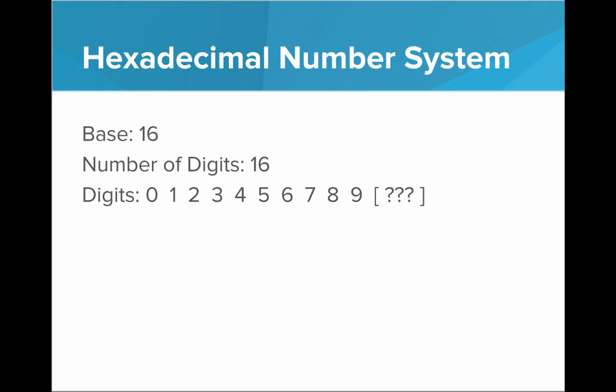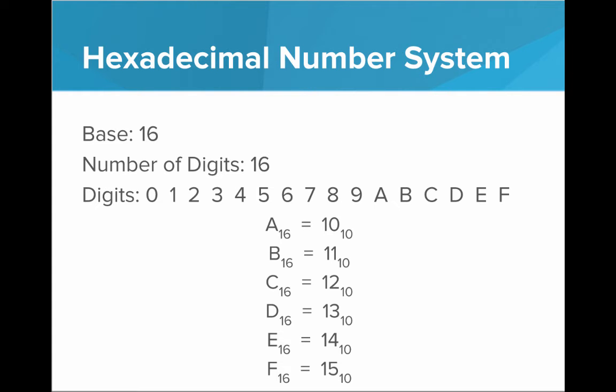Well, by convention, we use A through F. A really represents 10, B is 11, all the way up to F, which is 15. But these are single digits in the hexadecimal numbering system.